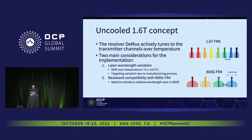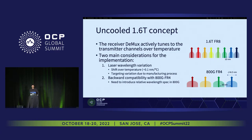The idea for the uncooled 1.6T concept is for the receiver to track all wavelength channels coming from the TX side, which can shift over temperature. There are two main considerations for implementing the tunable demultiplexer. The first is laser wavelength variation, which has two components: the shift over temperature, which we accommodate by tuning the demultiplexer, and the targeting variation due to manufacturing process, which must be accommodated by design. The second consideration is backward compatibility with 800G FR4 — we need to ensure the relative wavelength spacing between FR4 channels enables this compatibility.